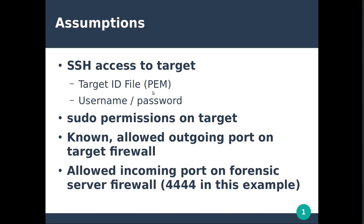You also need sudo permissions on the target — the ability to switch to a super user or get extra permissions, which is on by default. You'll also need known allowed outgoing ports on the target firewall. With Amazon Web Services, outgoing connections are not usually limited, but that's an easy rule to create, so whoever was running the system could have added firewall rules to disallow outgoing connections on particular ports. You also need allowed incoming ports on your forensic server firewall. In this case, we're using port 4444 to make connections between our forensic server and the target system.